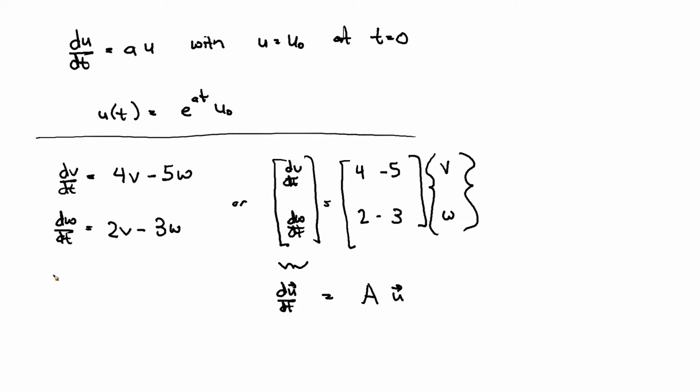I guess I need some boundary conditions or initial conditions. So let's say v at 0 is equal to 8, and w at 0 is equal to 5. Or again, in vector form, we might write u_0 is equal to [8, 5].